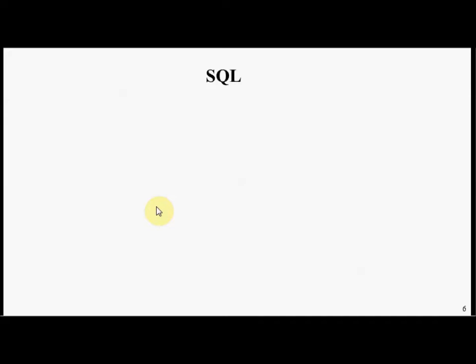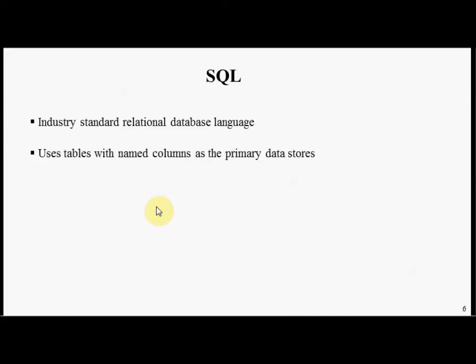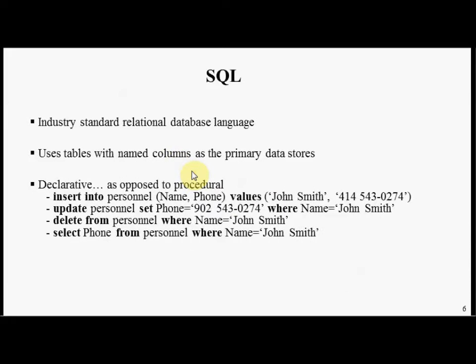Relational database technology uses something called SQL. SQL is an industry standard relational database language. Relational database technology uses the notion of tables which have rows and named columns as the primary data storage. SQL is a declarative language. It provides various constructs for inserting, updating, and deleting records in these tables and the ability to query on these tables. SQL has a strong mathematical foundation built on something called relational algebra.